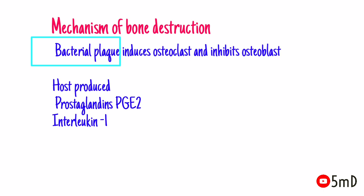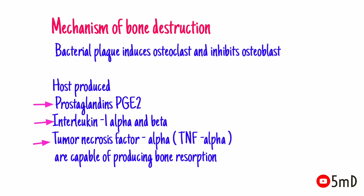What is the mechanism of bone destruction? Bacterial plaque induces osteoclasts and inhibits osteoblasts. Host-produced prostaglandins, interleukin-1 alpha and beta, and tumor necrosis factor alpha are also capable of producing bone resorption.